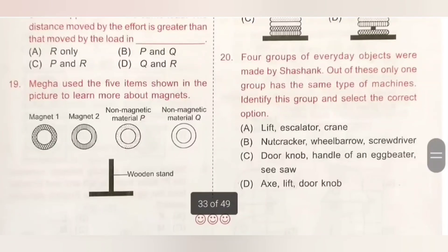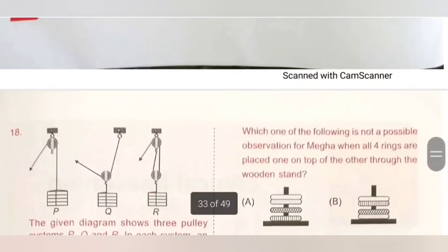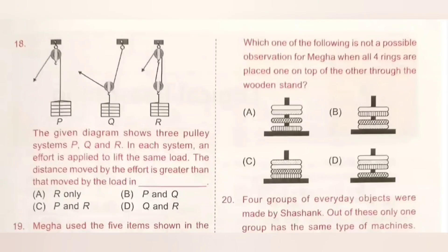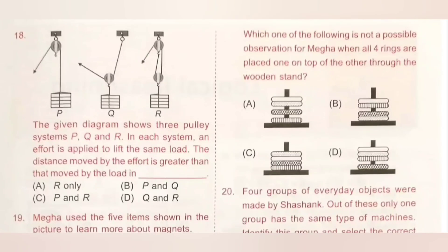Question 19: Mega uses five items to learn about magnets: magnet 1, magnet 2, non-magnetic material P, non-magnetic material Q, and a wooden strand. Which observation is not possible when all four rings are placed one on top of the other through the wooden strand? Option A is not possible because the top two non-magnetic materials will not repel each other — they will simply rest on the magnetic material. Option A is the correct answer.